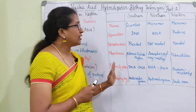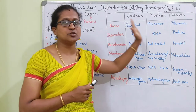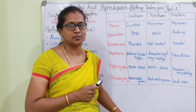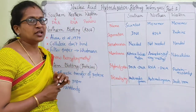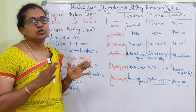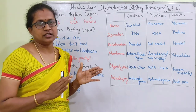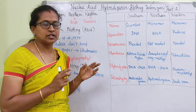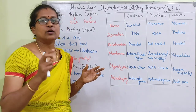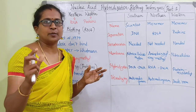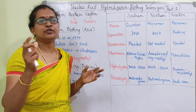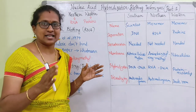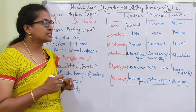So what we need to do is look at the differences between all three blottings, which we are going to discuss. In southern blotting, we use that analytical blotting technique where DNA-specific fragments are separated. The procedure is the same.